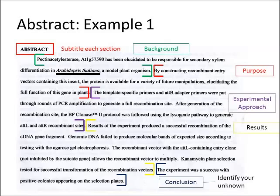Let's go ahead and take a look at an example. As you can see here, they've outlined every individual thing that you're going to need in your abstract: your background, purpose, your experimental approach, a quick rundown of your results, and then the conclusion, including the identity of your unknown.